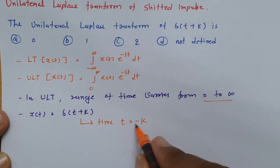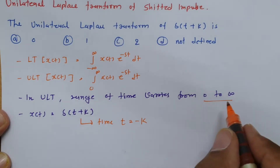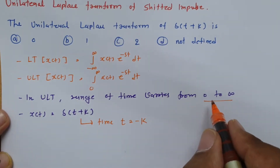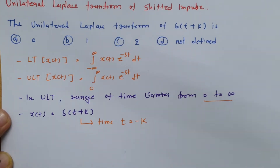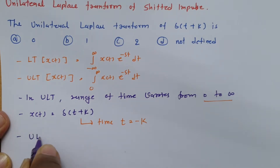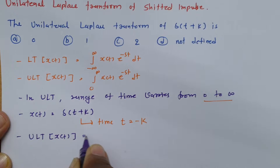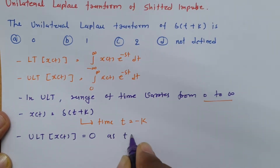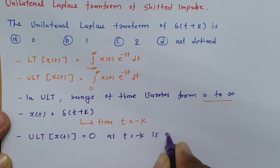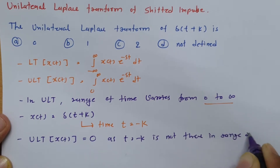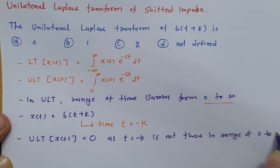Since t = −k is not happening in the range of 0 to infinity, one can say the unilateral Laplace transform (ULT) of x(t) is 0, because t = −k does not lie in the range of 0 to infinity.